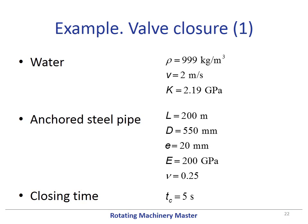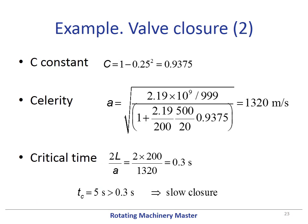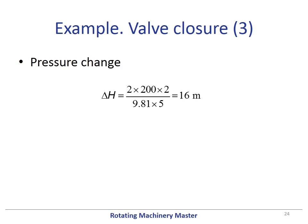This is an example of calculating the water hammer induced by a valve closure. Inside a pipe, we have water traveling at 2 meters per second. The pipe is an anchored steel pipe of 200 meters length. The closing time is 5 seconds. First of all, we compute the constant C for an anchored elastic pipe. Then we calculate the celerity and the critical time, which must be compared with the closing time. Since the closing time is larger than the critical time, the closure is slow. Therefore, the increase of pressure is given by Michaud's expression, resulting in 16 meters of column of water.